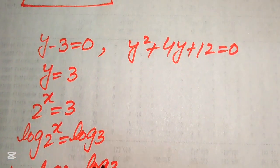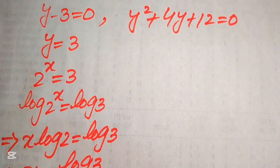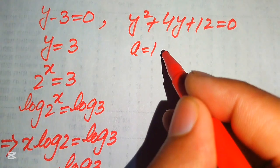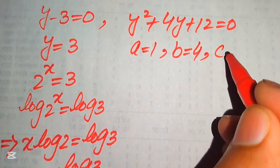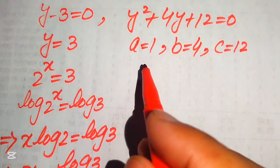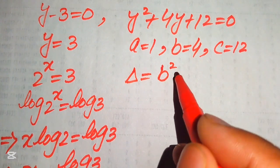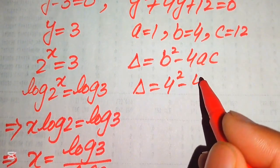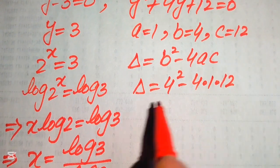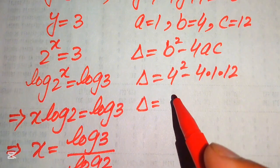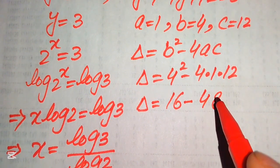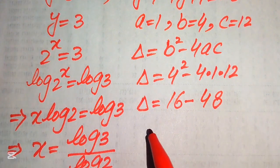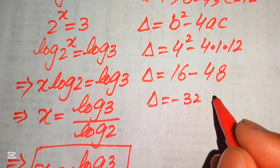For the second case, we check whether the quadratic y² plus 4y plus 12 equals 0 has real roots using the discriminant formula. The coefficients are a equals 1, b equals 4, and c equals 12. The discriminant delta equals b² minus 4ac equals 4² minus 4 times 1 times 12, which gives 16 minus 48 equals negative 32.